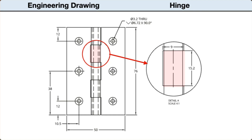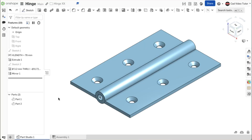Looking back at the drawing, the barrel is divided into 5 equal segments that make the knuckles of the hinge. The detailed drawing shows the dimensions. The width is 9 millimeters which leaves 0.5 millimeters on each side of the barrel. The length is 15.2 millimeters, which is the length of 76 millimeters divided into 5 equal segments. We will use a sketch to define the cuts for making the knuckles.